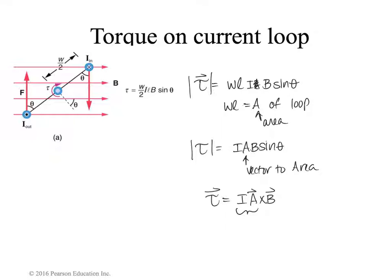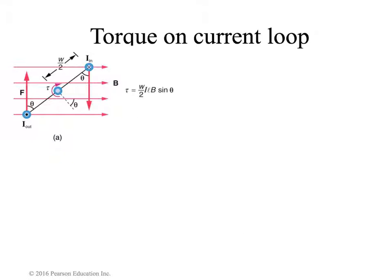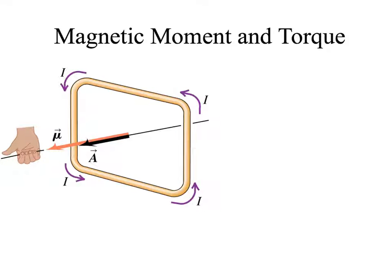We're going to assign the vector nature to the area. The area vector is perpendicular to the plane of the loop, and the torque expression is I A cross B. We call the quantity I times A the magnetic moment, mu. The magnetic moment mu equals I times A, getting its vector direction from the area. We curl our fingers in the direction of the current flow, and the way our thumb points is the direction of the area vector. This allows us to define the torque on the loop as mu cross B.